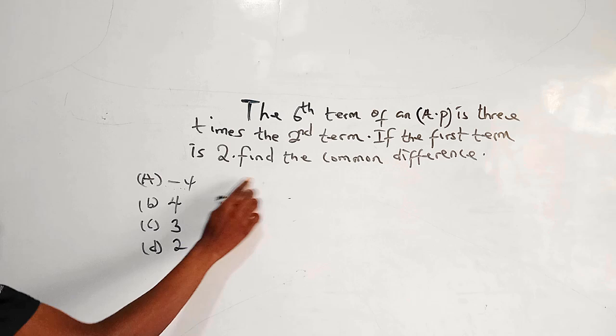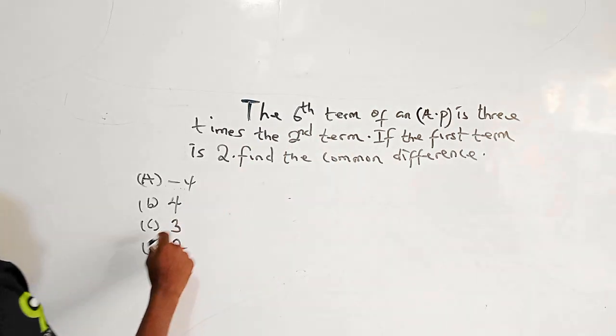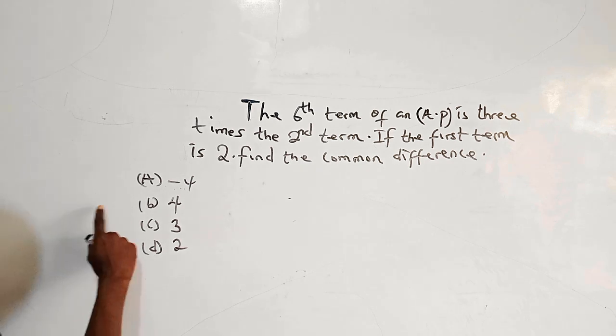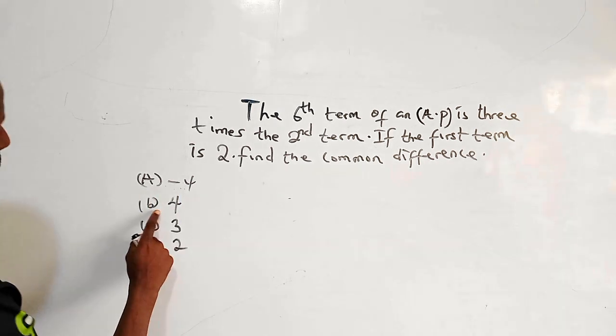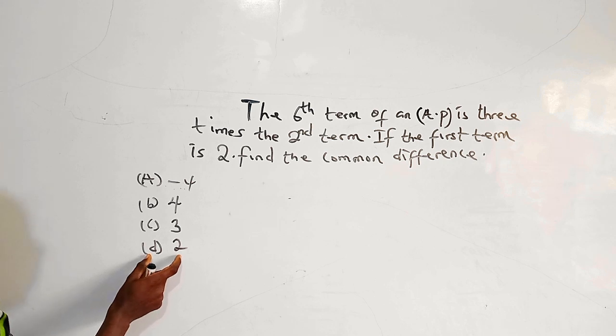So this is a question from an African Olympiad Mathematics competition from the senior category. And we are giving four alternatives: we have a to be minus 4, we have b to be 4, we have c to be 3, we have d to be 2.